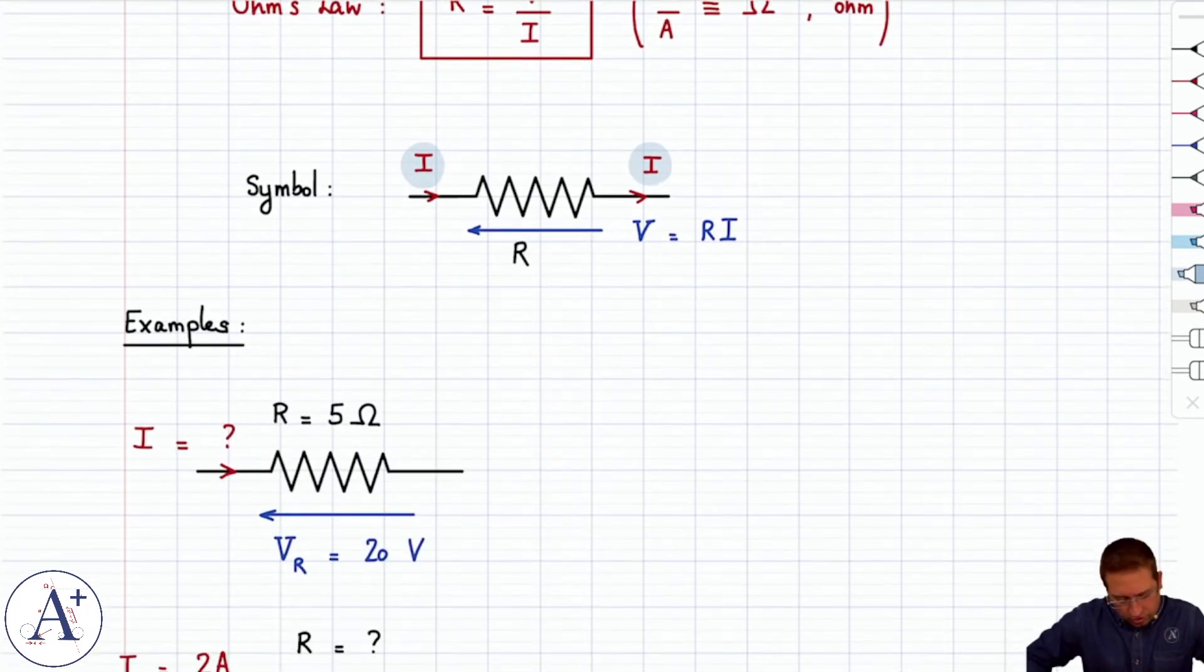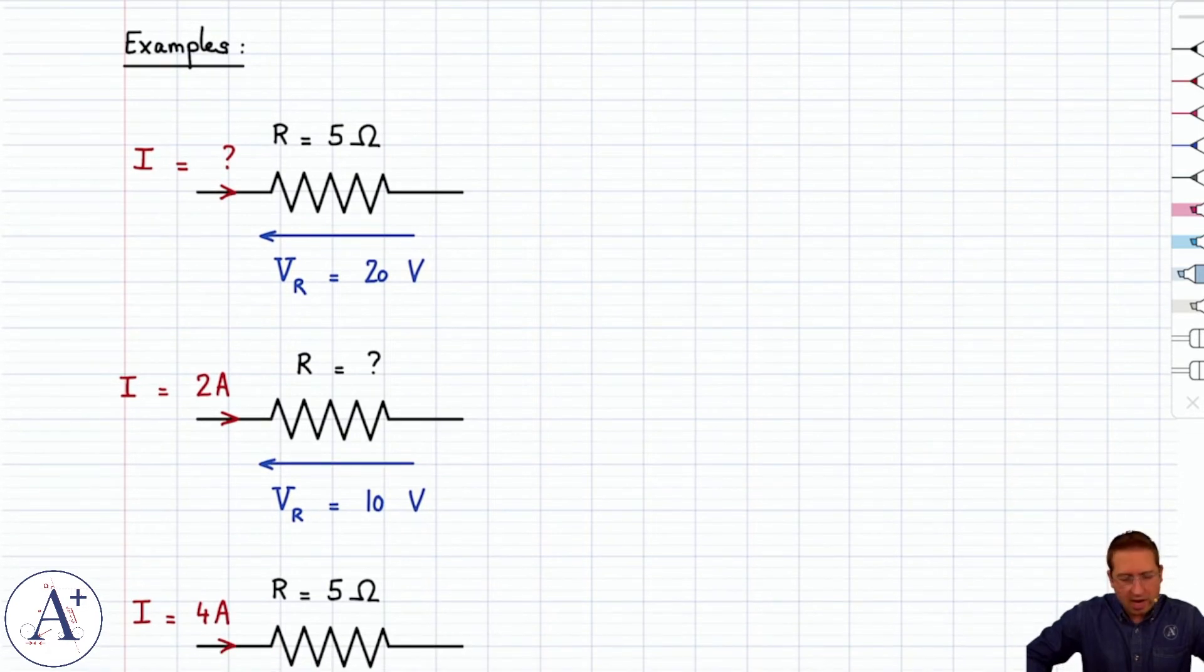Let's do a few examples to see how we compute V, R, and I given the other two, using Ohm's law. Then we'll talk about where you can get the value of R from. For now, we'll accept that resistance is given, but we might want to know how to compute resistance as well.